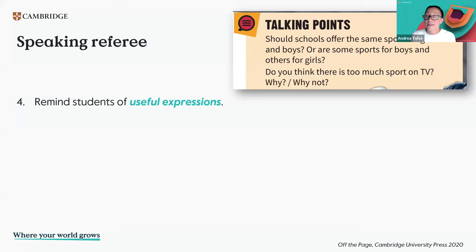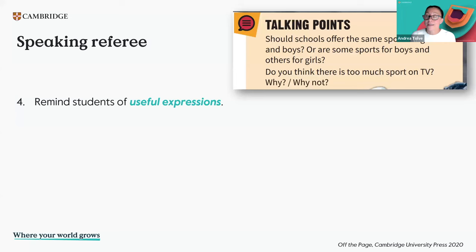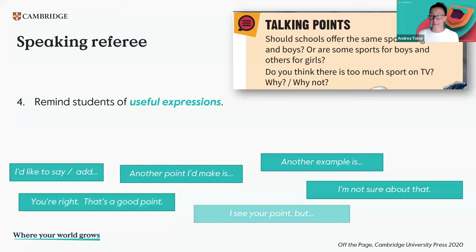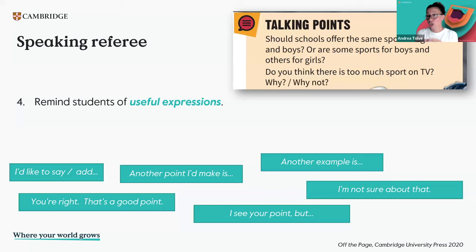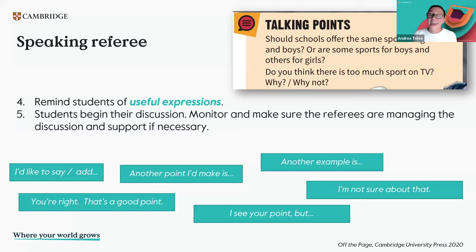The next speaker begins by using a turn-taking expression. If no one has put their hand up, the referee chooses the next speaker. Our students need support with turn-taking expressions. We could have them on the board while they're carrying out the discussion. What I did in the past with my students — I had expressions on cards, laminated them, and students could have them in the group. Then the students begin their discussion. It's important to monitor and make sure the referees are managing the discussion, and we're there to support if necessary.